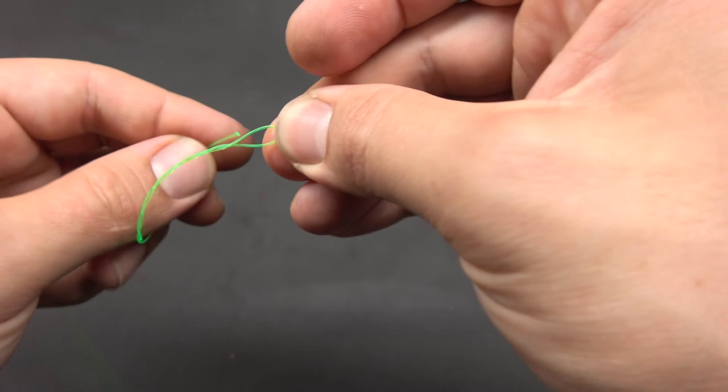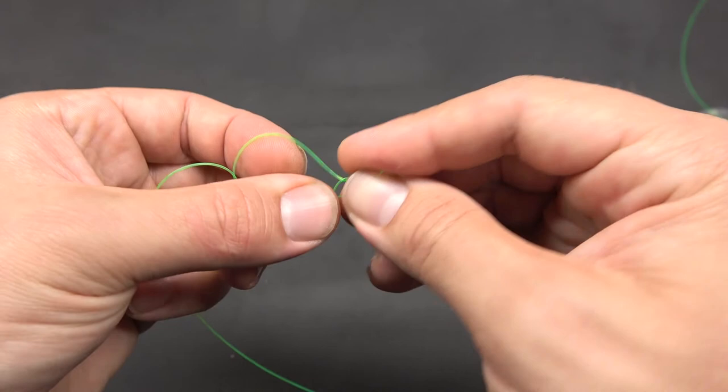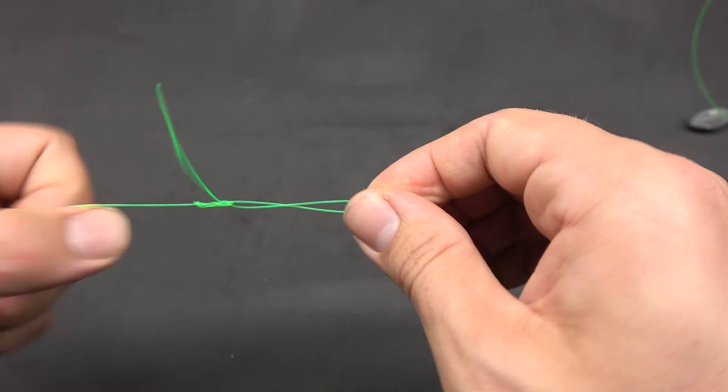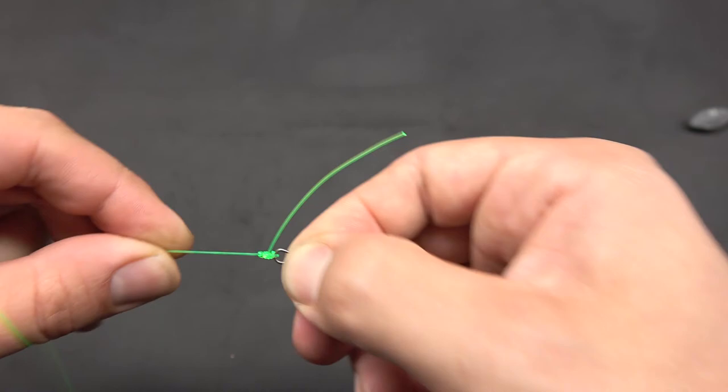Pass the tag end through this loop, and then pass it back through this other loop that created. This is actually called the improved clinch knot. Then we just pull tight, and there's your clinch knot.